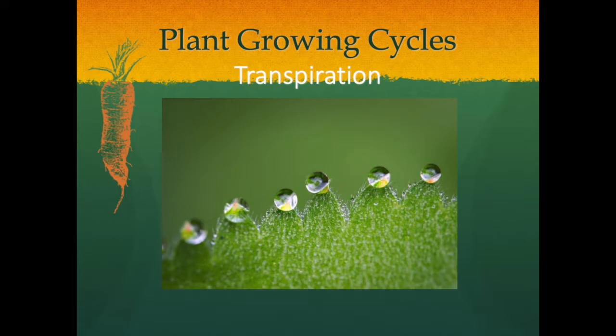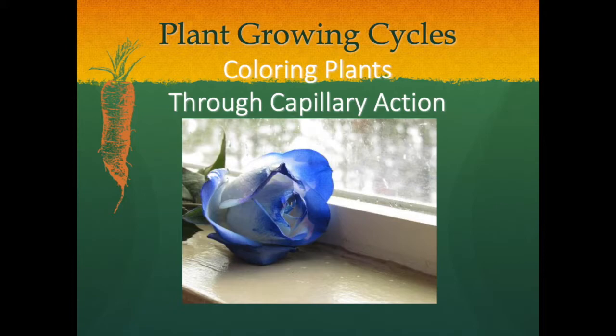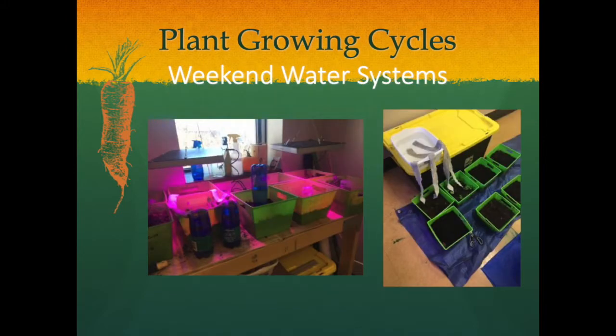Transpiration is water's movement through plants and its evaporation from plant parts into the atmosphere. Water moves through plants via capillary action, a process that involves cohesion and adhesion. The bipolar nature of water makes individual water molecules pull or stick together, and these groups of water molecules can move up the xylem capillaries through adhesive properties of the plant that attract the water molecules upward, allowing water to defy gravity. If food coloring or dye is added to a plant's watering supply, capillary action can be observed as the dye travels up the plant stem and out to the petals. Students may use their insights about capillary action to design weekend watering systems from recycled water bottles.